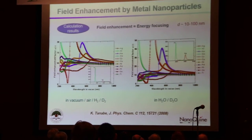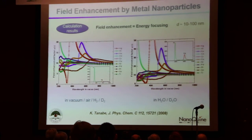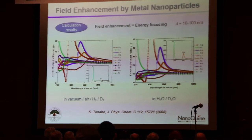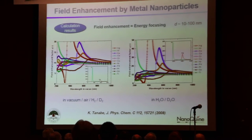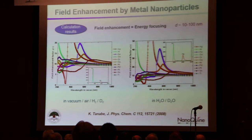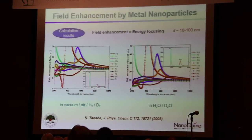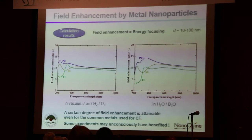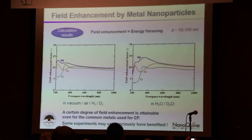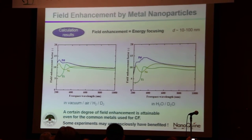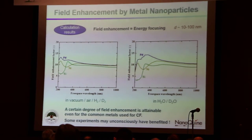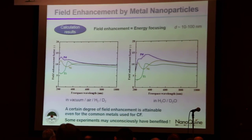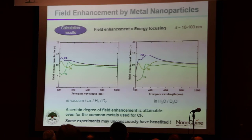Particularly for condensed atoms close to the surface of the metal such as platinum, we can see that effect, and probably can harvest this to enhance the CF reaction. For conventional metal elements such as platinum, nickel, and titanium, we also see the enhancement effect of around 10 times for both gas and liquid phase systems.